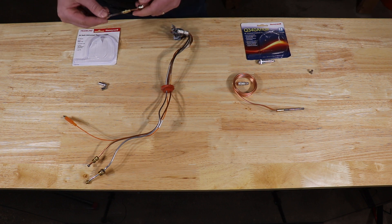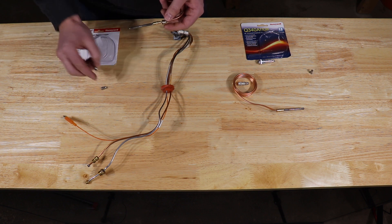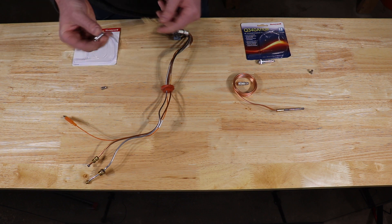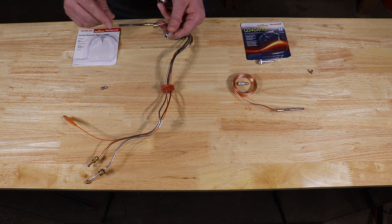If you're using the screw-in style, you would take your first fitting adapter. This has a flange on it. The flange goes towards the tip of the thermocouple. Slides over top.